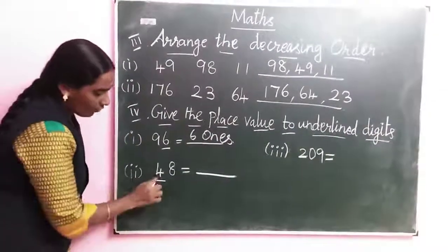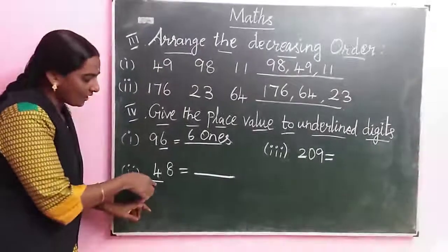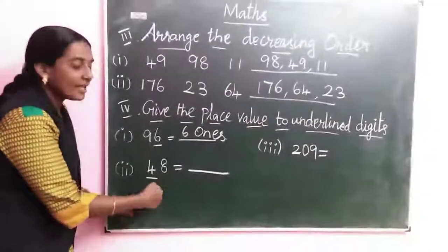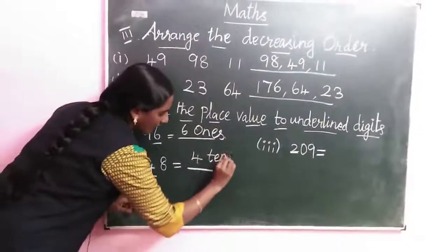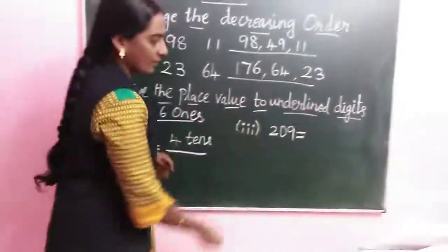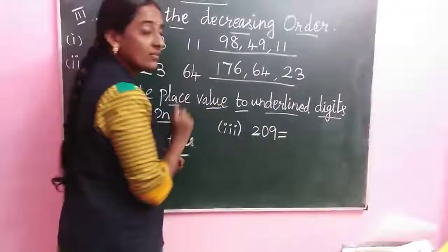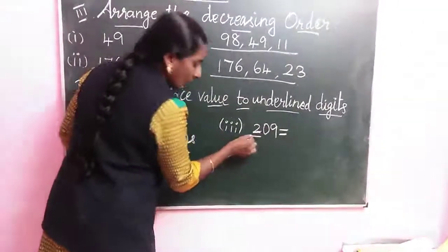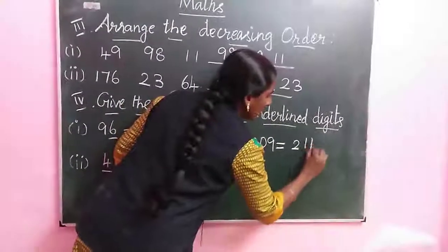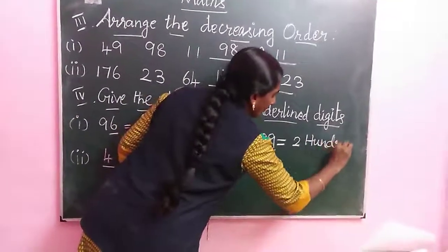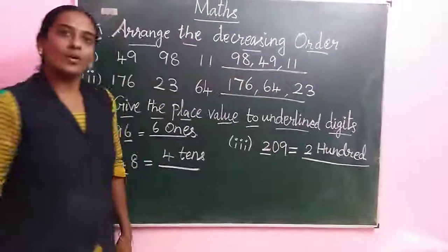Like this only. Second one: 48. 4 is underlined. Next place is 10. So 4 tens. Look at that. Third question: 2 stands. Next place value is 100. So how many hundreds? 200.